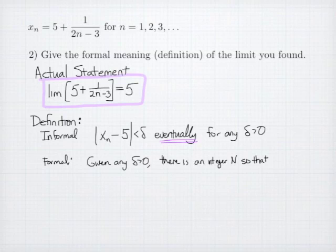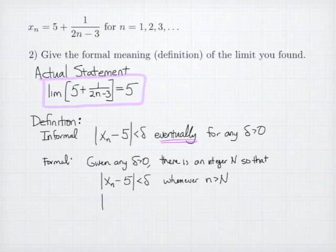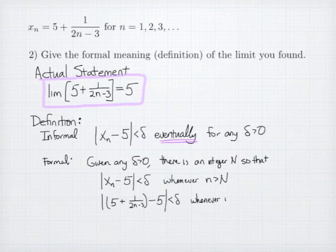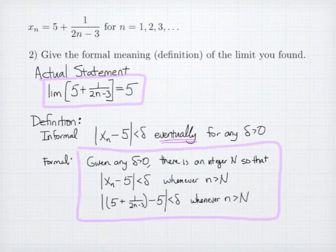To get full credit, we also need to explain what this eventually means. So the formal definition has to do with saying that given any delta greater than 0, there is an integer N so that the distance between my sequence and my value 5 is less than delta as long as or whenever my index is bigger than that N. To finish this off, I need to replace that xn with my formula, 5 plus 1 over 2n-3. The distance between my sequence and the number 5 is less than delta whenever n, the index, is greater than my N. This is the formal definition of the limit statement that we were showing.